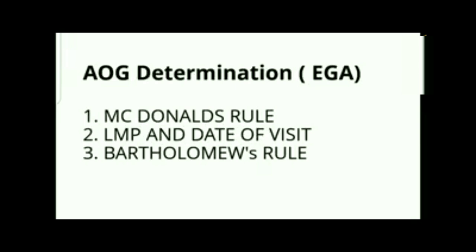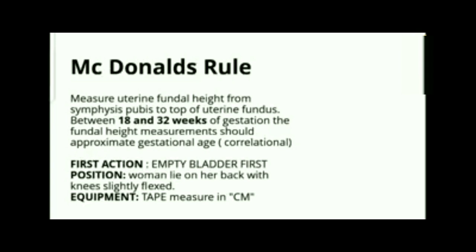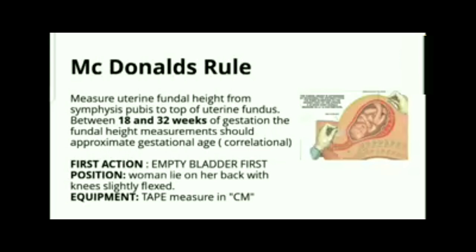Next topic: age of gestation determination, also called estimated gestational age (EGA). Common methods include: (1) McDonald's Rule, (2) LMP and date of visit, and (3) Bartholomew's Rule. McDonald's Rule involves measuring the uterine fundal height from the symphysis pubis to the top of the uterine fundus. Between 18 and 32 weeks of gestation, fundal height measurements should approximate gestational age.